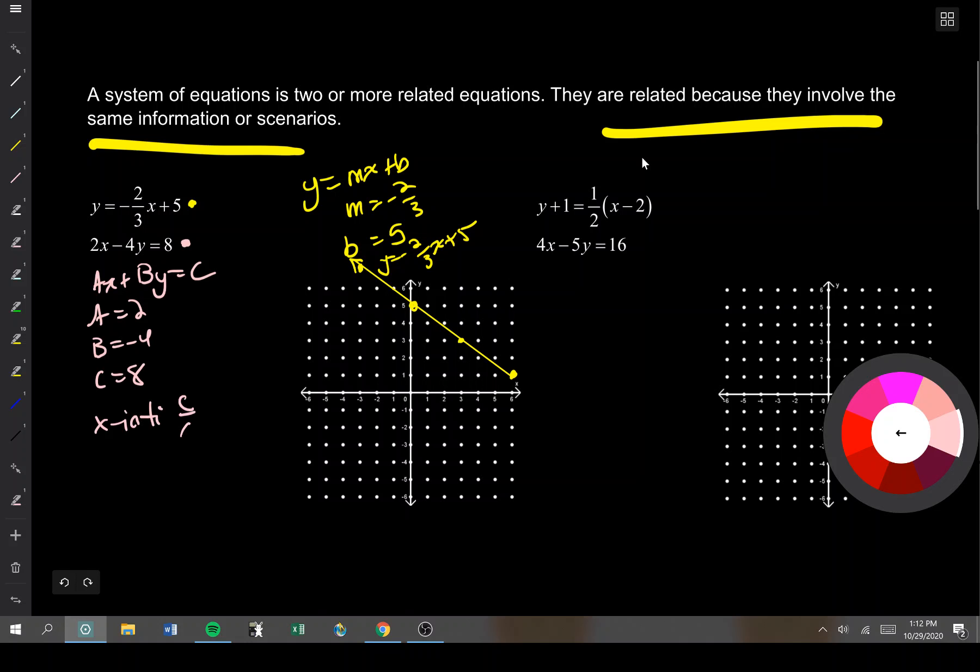To find the x-intercept, I do c divided by a, which is 8 divided by 2, which is 4, right here. To find the y-intercept, I do c divided by b, which is 8 divided by negative 4, which is negative 2. So it's down here.